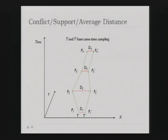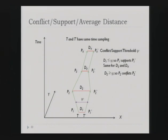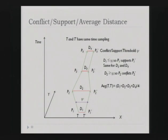This example shows what confluent support means. With confluent support threshold phi: D1 is less than phi, so P1 supports P1-prime, and similarly P3 supports P3-prime, and P4 supports P4-prime. However, D2 is greater than phi, so P2 conflicts with P2-prime. The average distance between the two trajectories is the average of D1 through D4 divided by 4.